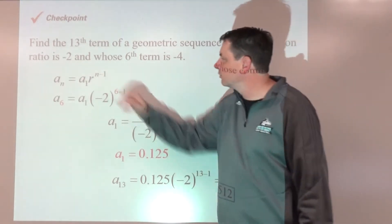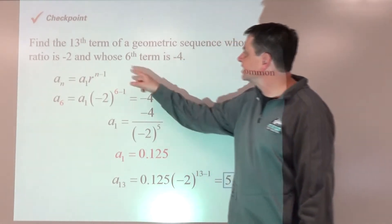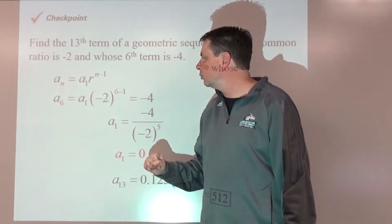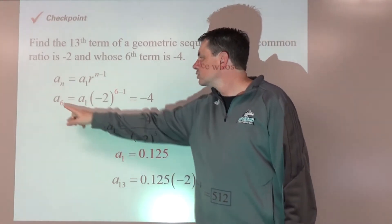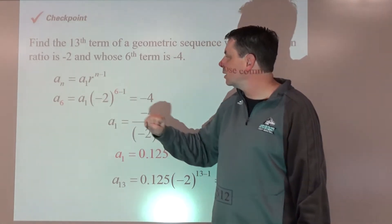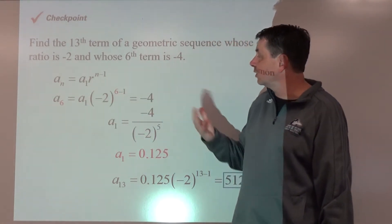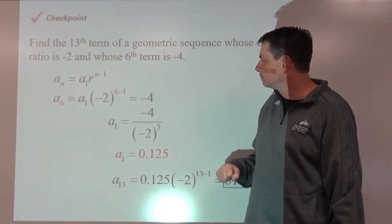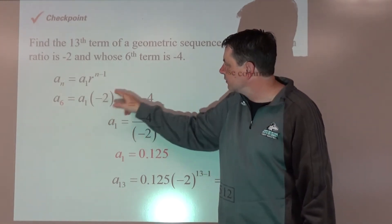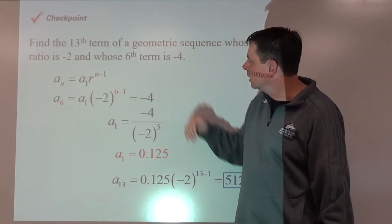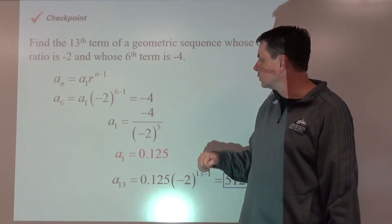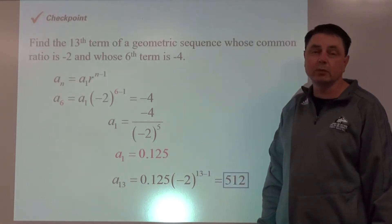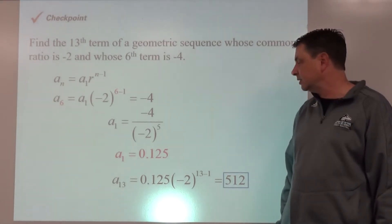Here's our formula using the sixth term to find the unknown a-sub-1. The sixth term equals a-sub-1 times the common ratio to the power of 6 minus 1, or 5, which equals negative 4. Taking negative 2 to the fifth power and dividing both sides gives a-sub-1 equals 0.125, or equivalently 1/8.